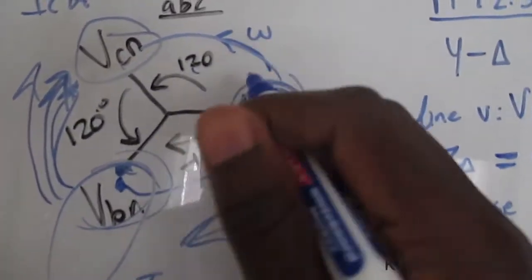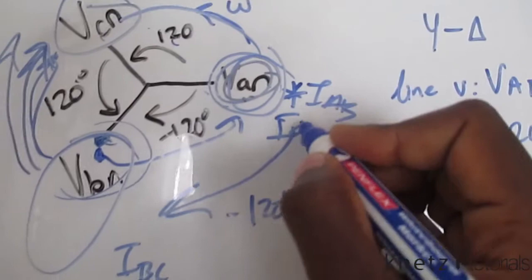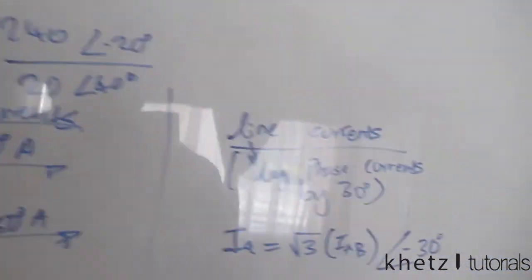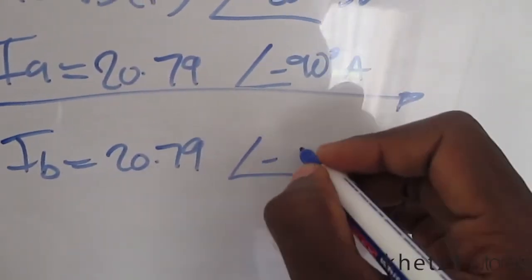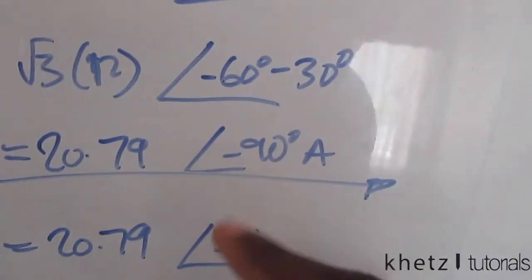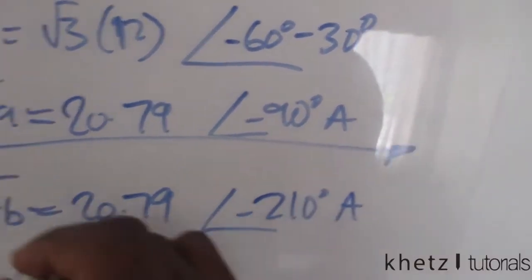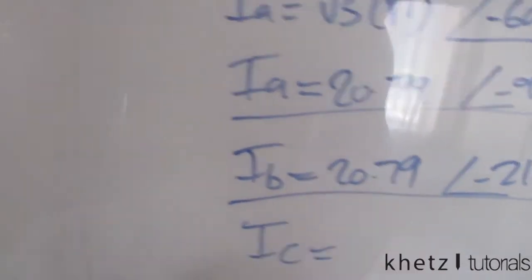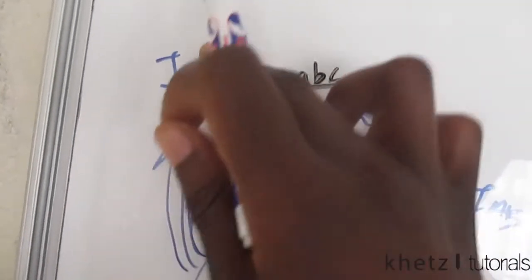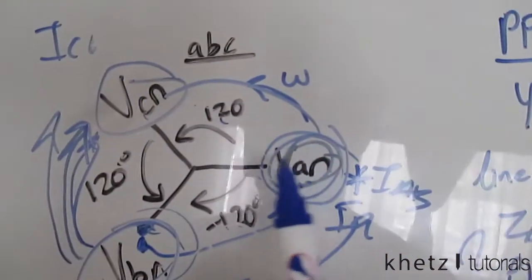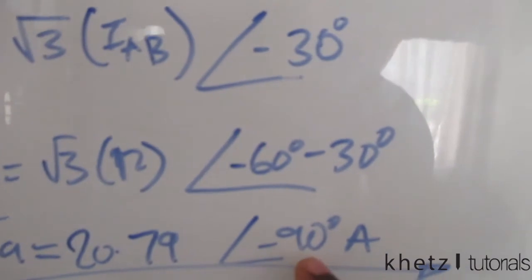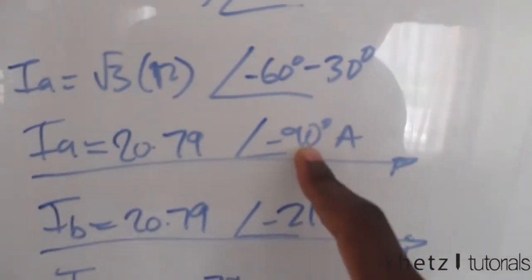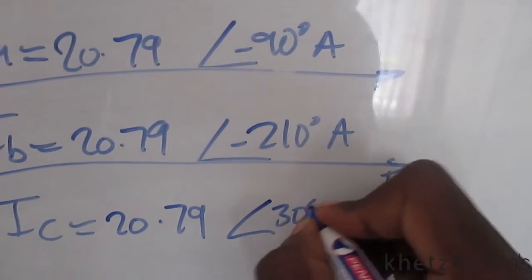From this one value we can use the ABC sequence diagram to find the others. To find IB, subtract 120 degrees from IA's angle: 20.79 at negative 90 minus 120 gives negative 210. For IC, which is situated at the next position, you add 120 degrees to IA's angle of negative 90, which gives 30 degrees. So IC is 20.79 at 30 degrees.